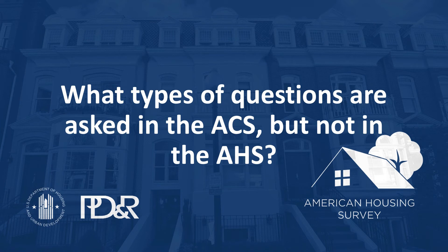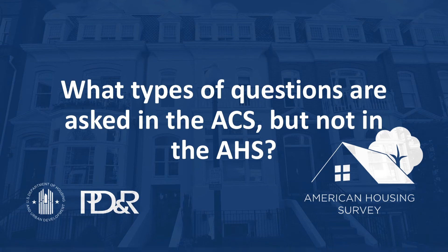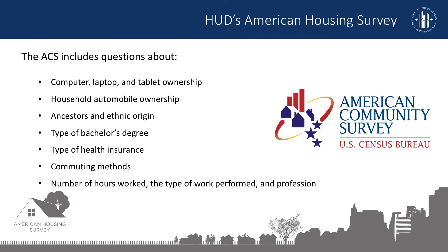Now, let's take a look at the types of questions that are asked in the ACS but not in the AHS. The ACS includes a variety of questions not found in the AHS. For example, the ACS includes questions about computer, laptop, and tablet ownership, as well as questions about how households access the Internet — cell phone, DSL, cable modem. The survey includes a question about household automobile ownership, a question about ancestors and ethnic origin, a question about the type of bachelor's degree if applicable, a question about the type of health insurance, as well as questions about VA service-connected disability status and rating. The ACS also includes a question about commuting methods and the journey to work, questions about the number of hours worked and the type of work performed, along with questions about profession.